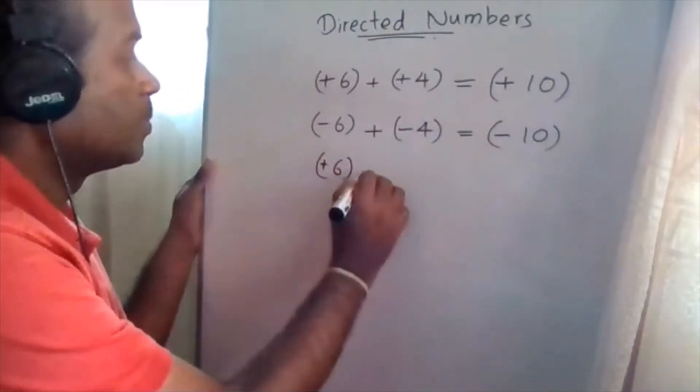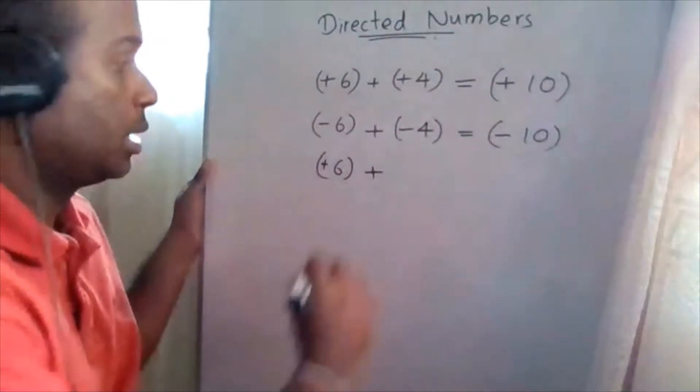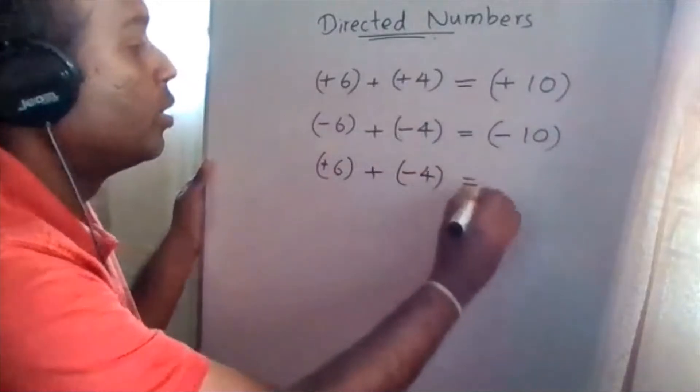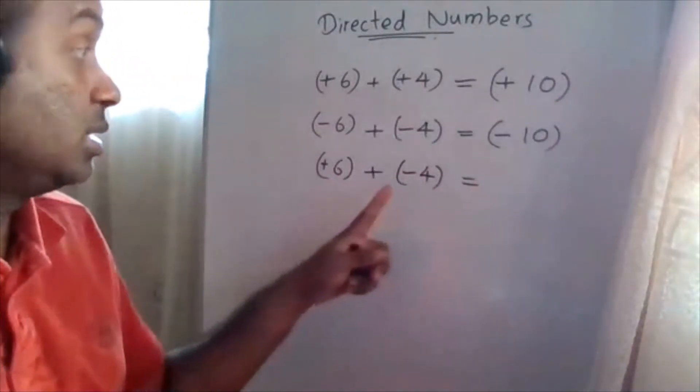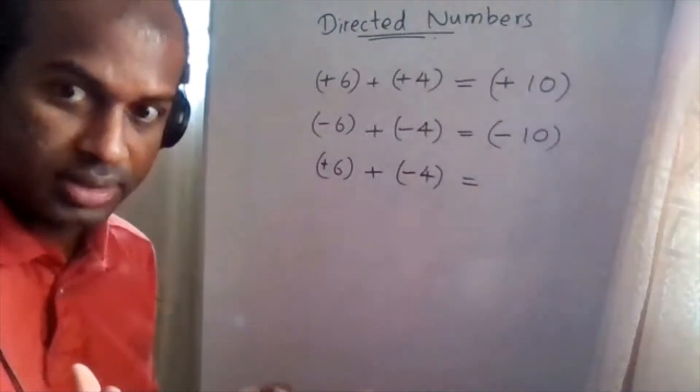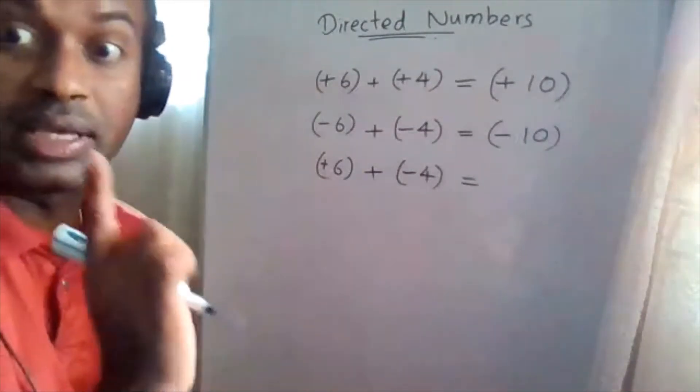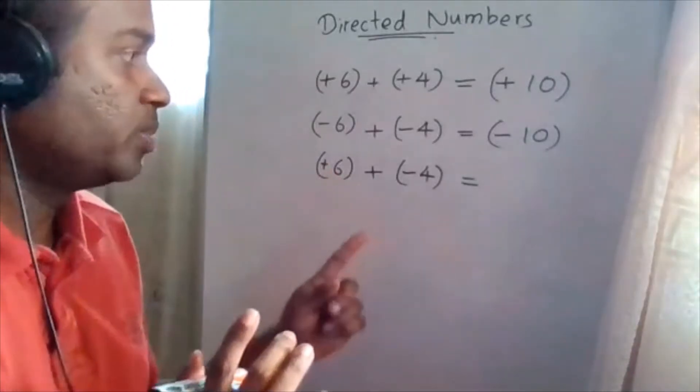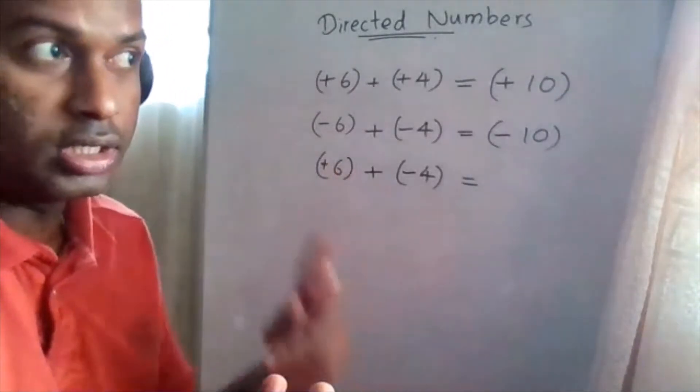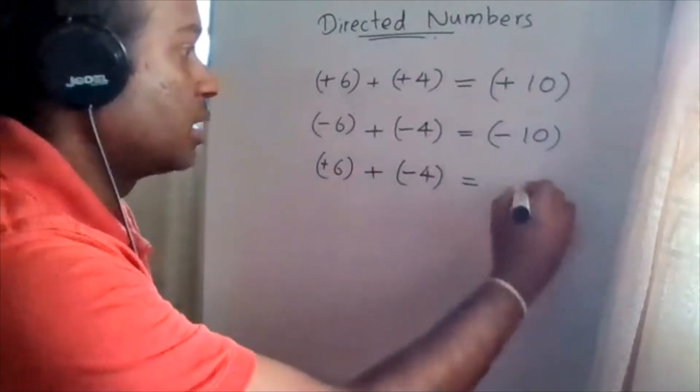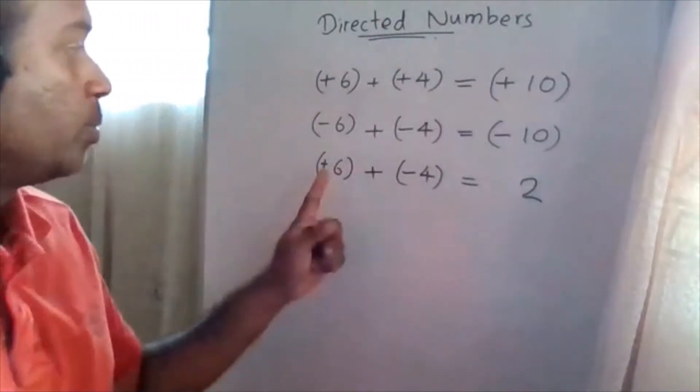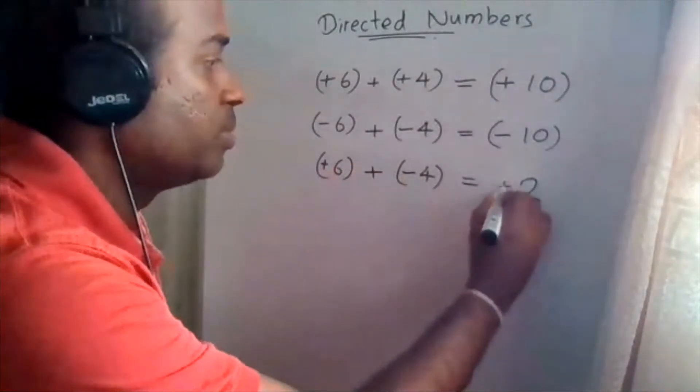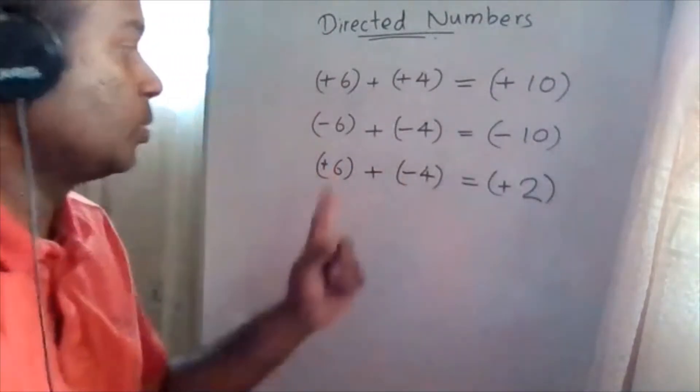Suppose this one is given as positive 6 addition negative 4. Now this is positive, this is negative. They are in different signs. What we should do, you have to take the difference. What is the difference between 6 and 4? It is 2. Positives are greater than negatives. Therefore this should be positive for the highest sign.